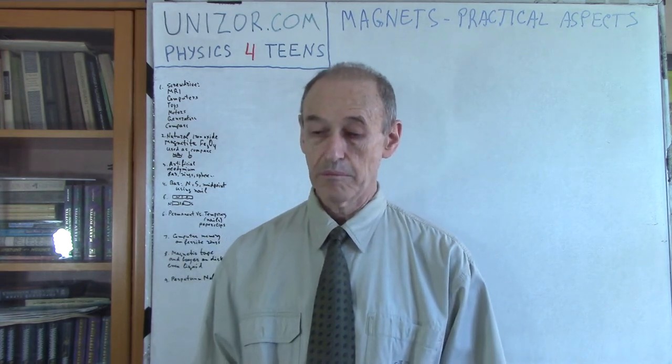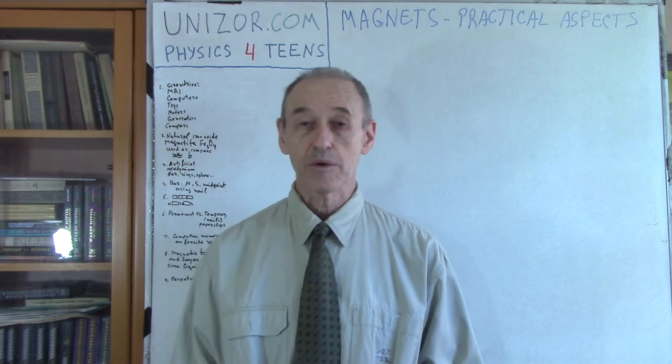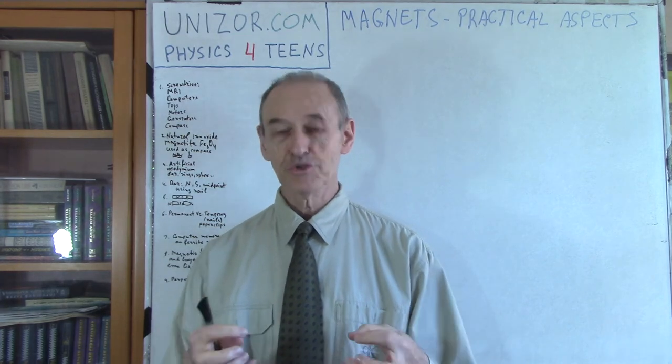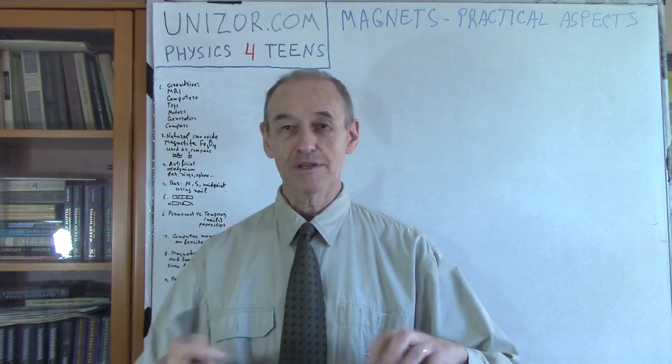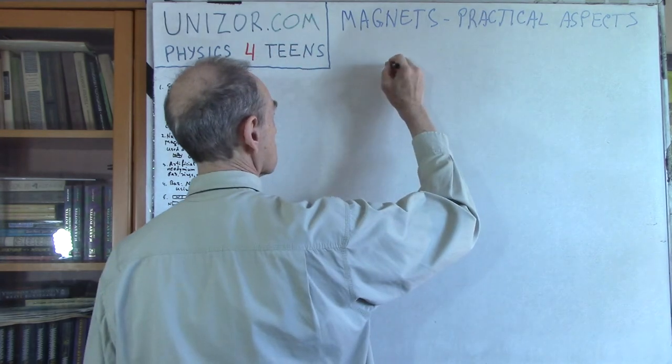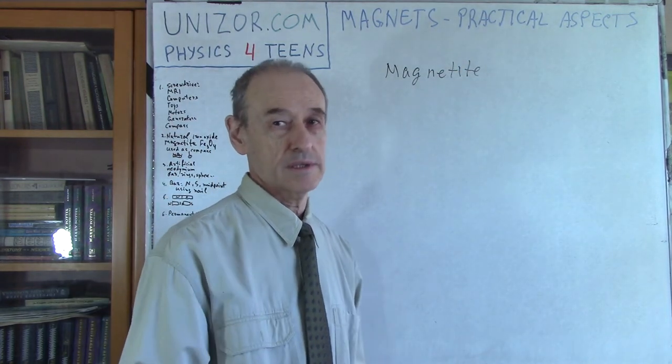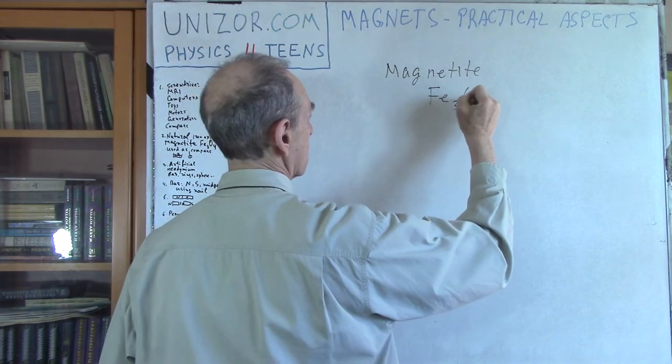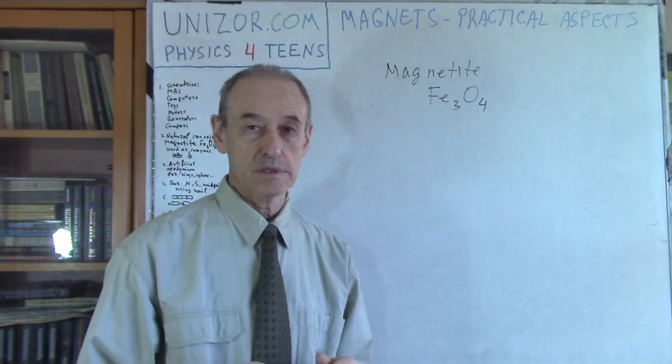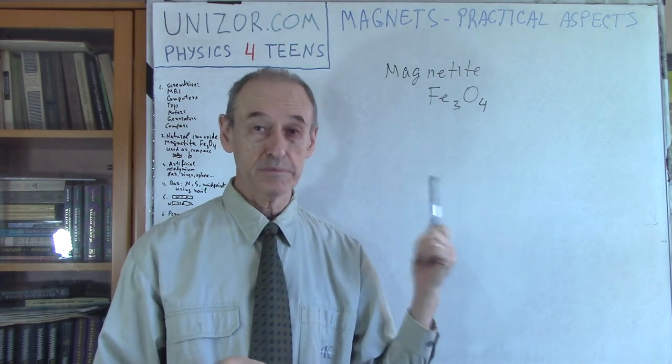Magnets do occur naturally, like we can find them as a rock basically. That's how they were first found and were subject to curiosity. These rocks can either attract each other or repel each other depending on which side you turn it. These are called magnetites and it's iron oxide, the chemical composition is Fe3O4. Every molecule has three atoms of iron and four atoms of oxygen. That's the naturally occurring permanent magnets. They are weak.